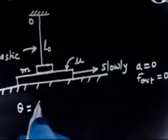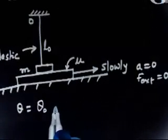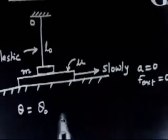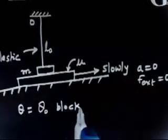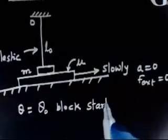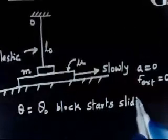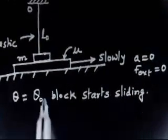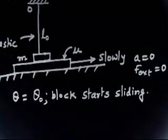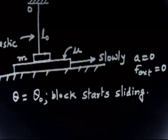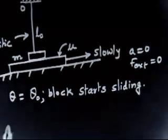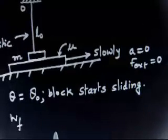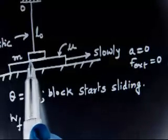When θ equals θ₀, the plank and block are sliding — the block just starts sliding. We have to find the work done by the friction force acting between the plank and the bar, with reference frame fixed to the plane — that is, work done by friction force with respect to ground.